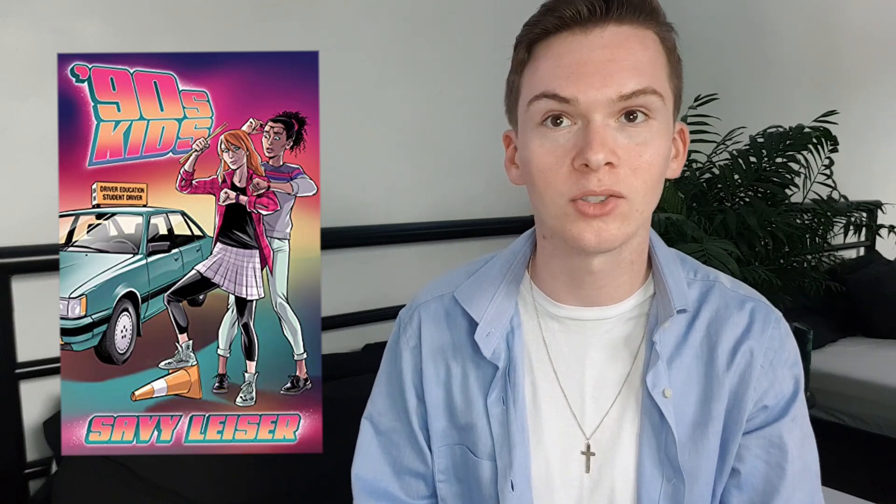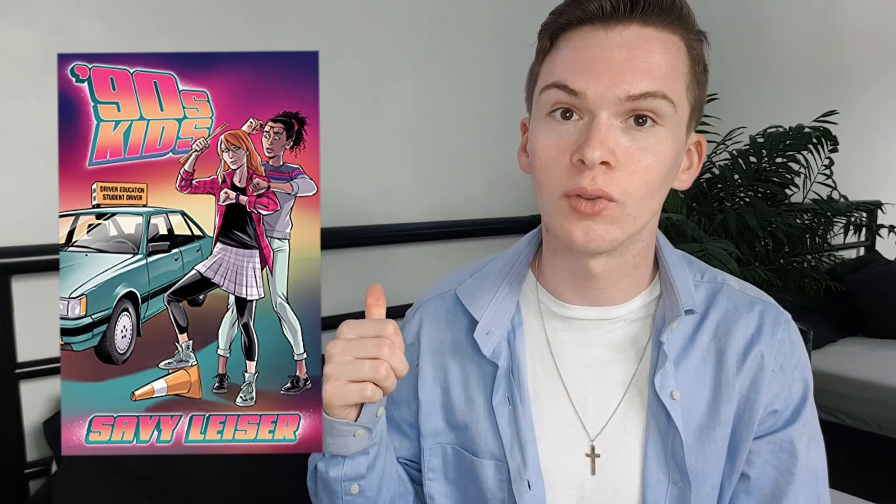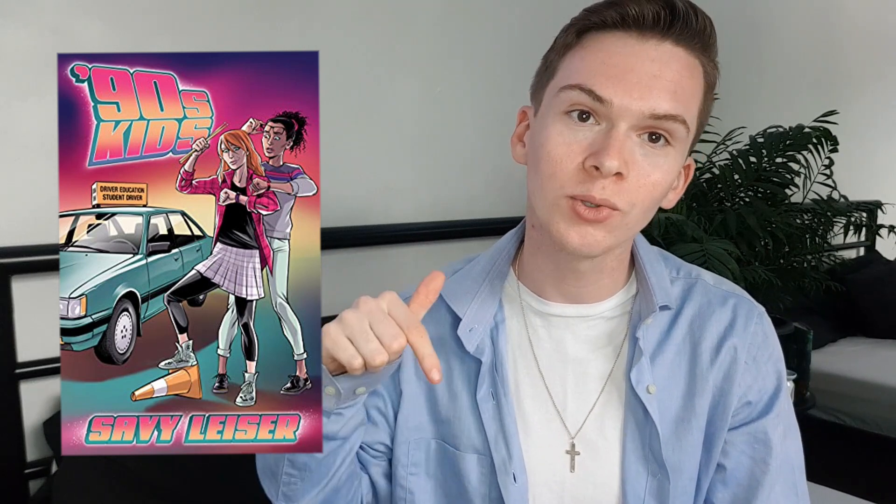The oldest book that I've read so far this year is Memoirs of Fanny Hill by John Cleland. This came out in 1748 and I talked about that one in my first episode of my LGBT classics video which will be linked in the description as always and the newest book that I've read this year was 90s Kids by Savvy Lesser and that came out on the 8th of June 2021 so literally last month and I just reviewed that in my June wrap up which will also be linked in the description. I enjoyed both of them though I will say right now that's not really a spoiler.